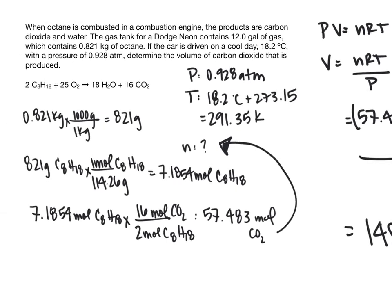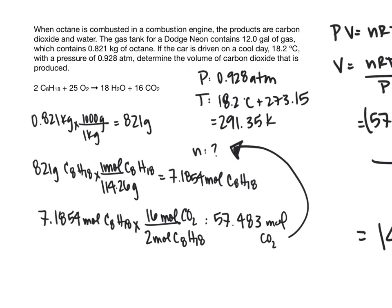You may have been distracted by the 12 gallons of gas — that is extraneous information. Converting gallons to liters gives no additional information because the question asks about the volume of carbon dioxide produced, which is unrelated to the volume of the gas tank.